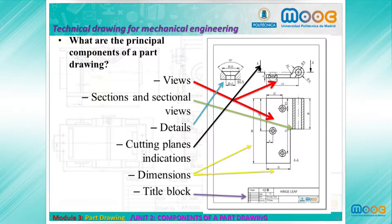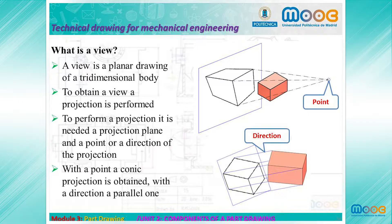What are the principal components of a Part Drawing? A Part Drawing contains Views, Sectional Views, Details, Cutting Plane Indications, Dimensions, and the Title Block.